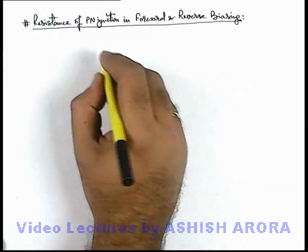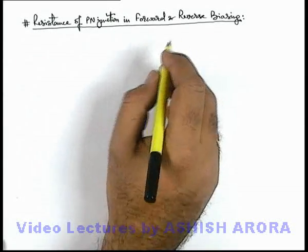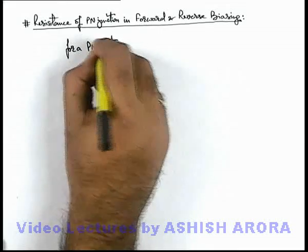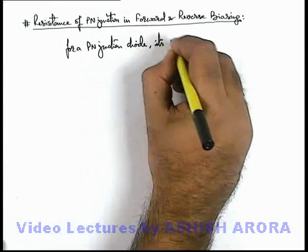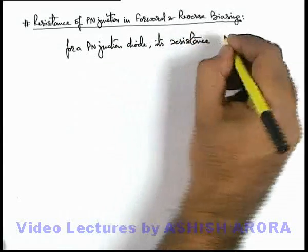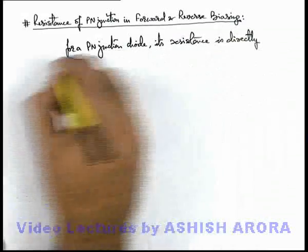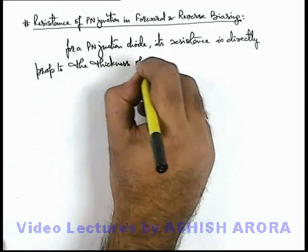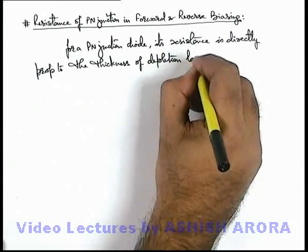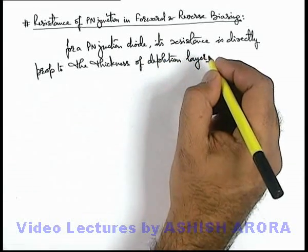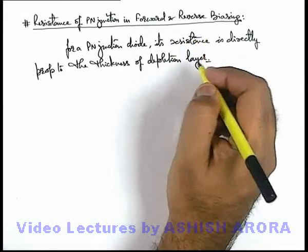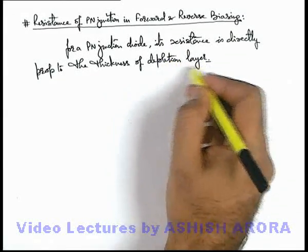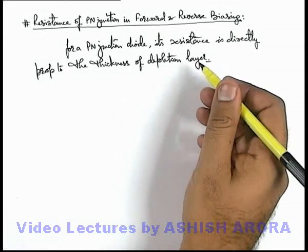So we can write a thumb rule for analysis of resistance in forward and reverse biasing: for a p-n junction diode, its resistance is directly proportional to the thickness of the depletion layer. As thickness of the depletion layer increases, the low conductivity zone will be larger in width and hence its resistance will be high. If depletion layer width is low, the relative presence of charge carriers is less, so its resistance will also be less.